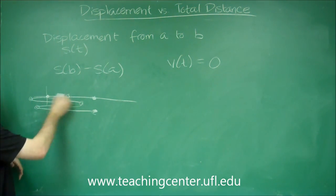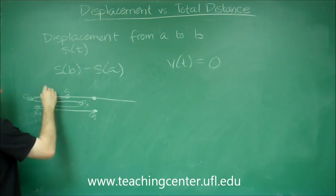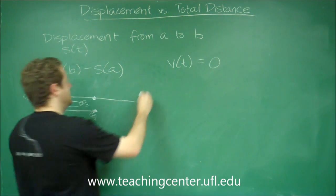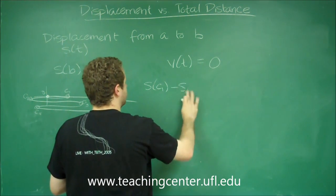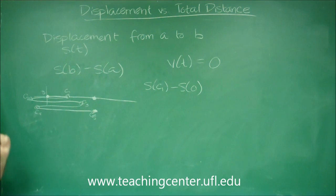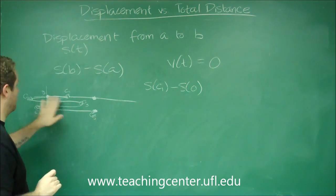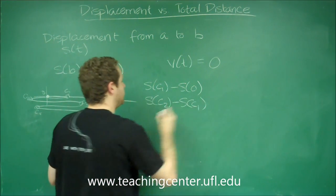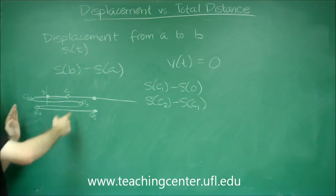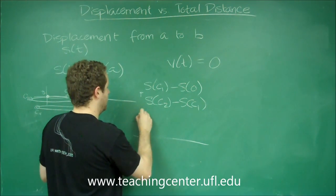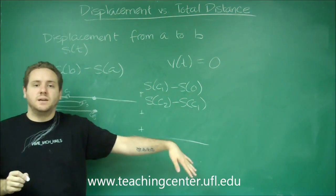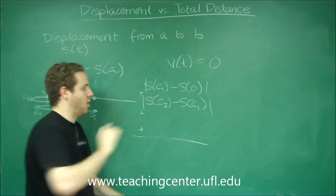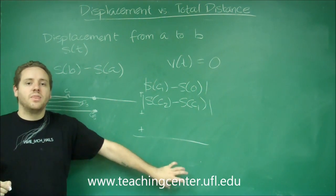Then you need to break them all into separate distances. Let's call the times c1, c2, c3, c4, and c5, and this one was zero. You would need to do s of c1 minus s of zero - that would give you this distance. The next distance would be s of c2 minus s of c1, and then on and on. You would add up all of those distances together. If any of these are negative, you would make them positive. So really we should be doing absolute value around all of these. If you add those all together, that will give you the total distance.